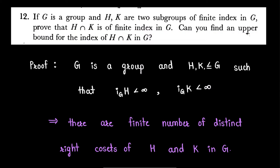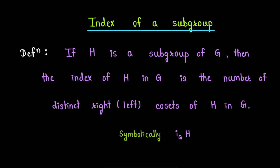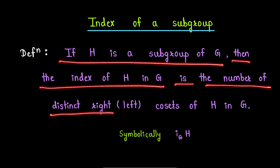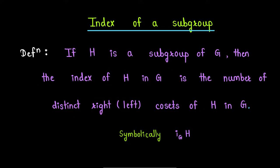Firstly, note that for two subgroups H and K of group G, their intersection is also a subgroup of G. Now we will recall the definition of index of a subgroup. If H is a subgroup of G, then the index of H in G is the number of distinct right or left cosets of H in G, and this is the symbolic notation for the index of a subgroup H in G.